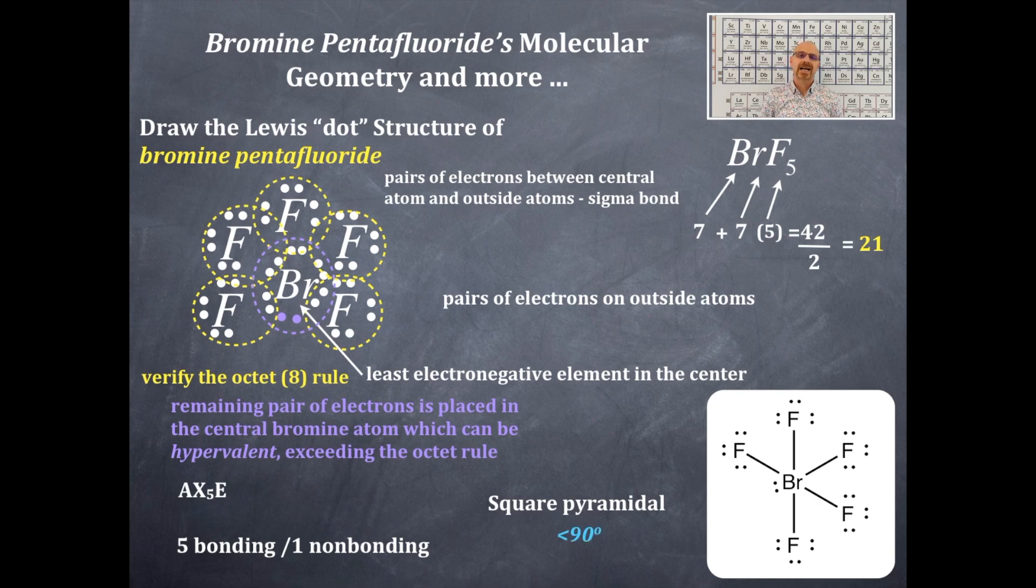Now we get the hybridization. That is S, P1, P2, P3, D, D2. It's sp3d2 hybridized.